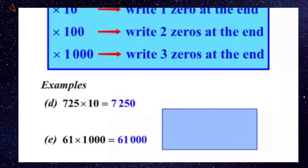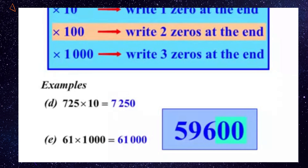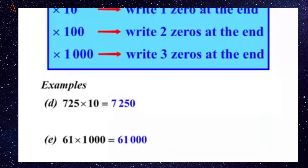Our final question here: 596 times 100. Let's write the 596 down firstly. We're timesing by 100, so in this case we write two zeros at the end. And here is our number now: 59,600. Excellent. Well, that concludes the lesson. Good luck with your questions.